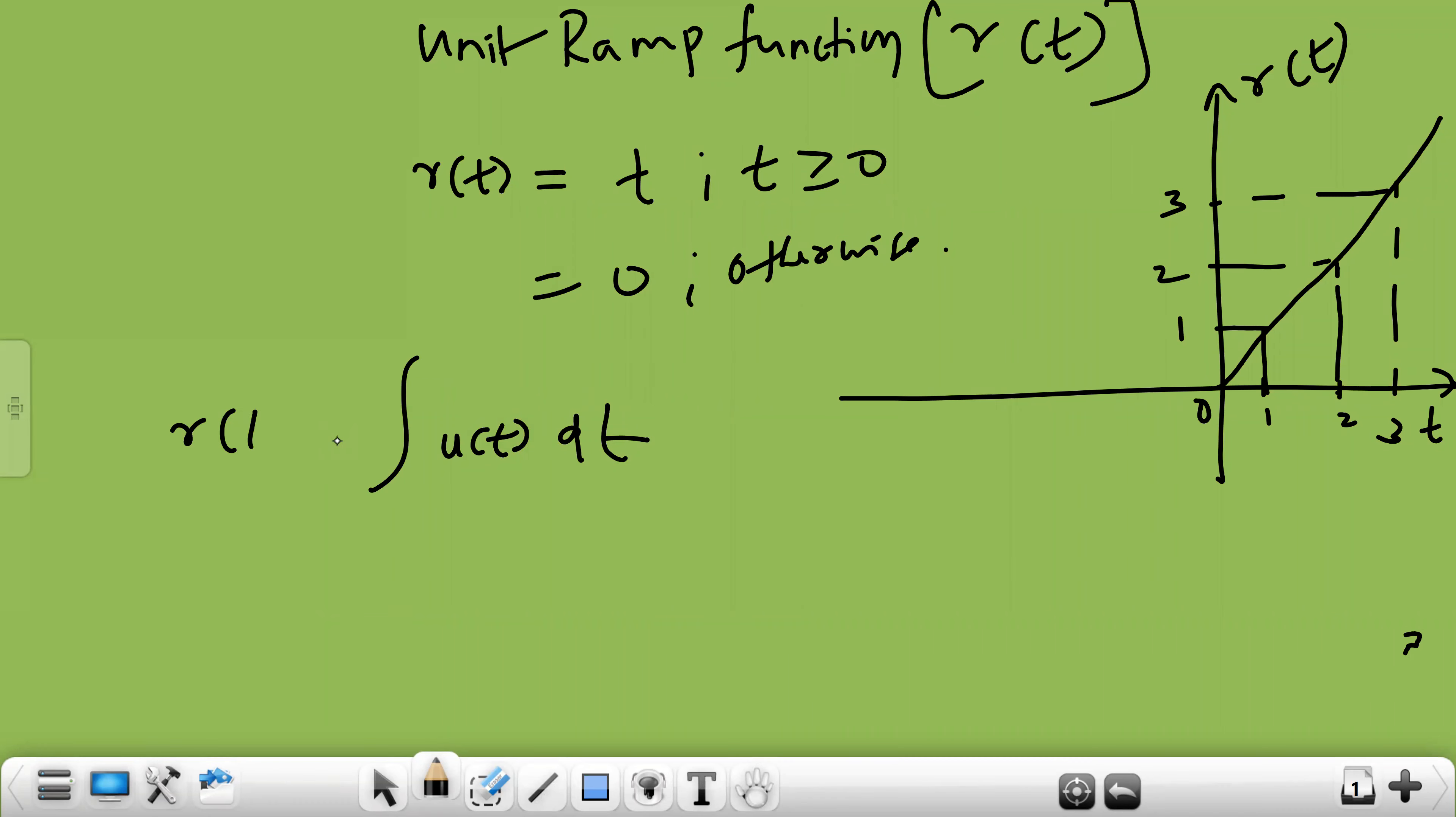You can integrate. Yes, integrating a unit step function will lead to a ramp function because u of t is 1. 1 dt is t. That is nothing but r of t. So remember, the integration of a unit step function will result in ramp function.